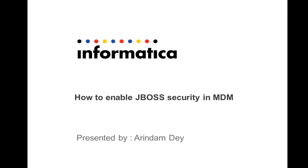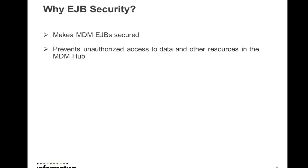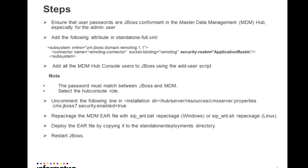Hi, this is Arindam from the Informatica MDM support team. Today I'm going to discuss how to enable JBoss security in MDM. The reason why we need EJB security is basically to make the MDM EJB secured so that unauthorized access to data and other resources within the MDM hub can be prevented.